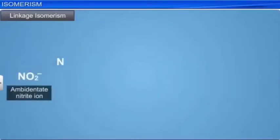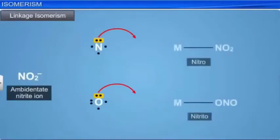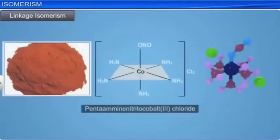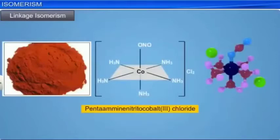Two different complexes, each containing nitrite ions, have been prepared. For example, red penta-amine nitrito-cobalt(3)-chloride, in which the nitrite ligand is bound through oxygen, and yellow penta-amine nitro-cobalt(3)-chloride, in which the nitrite ligand is bound through nitrogen to the metal ion.